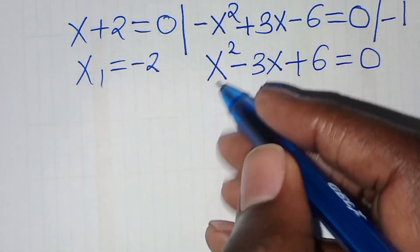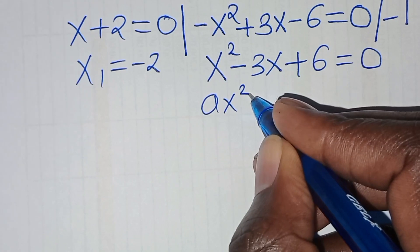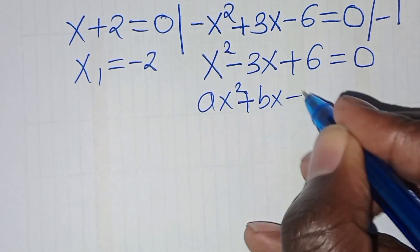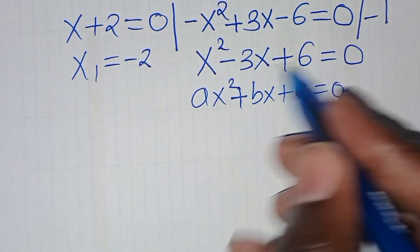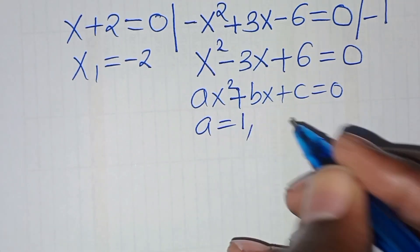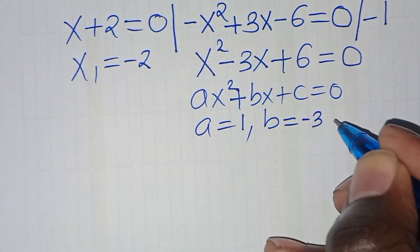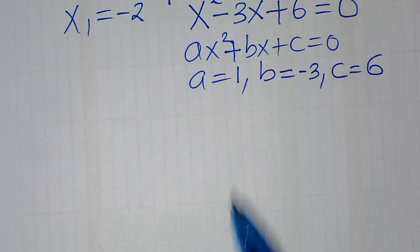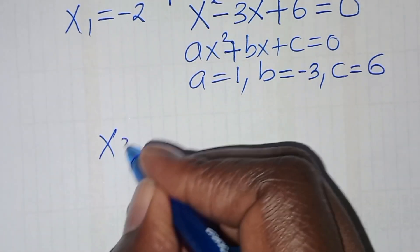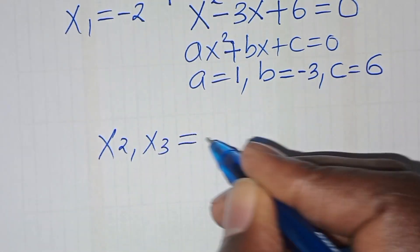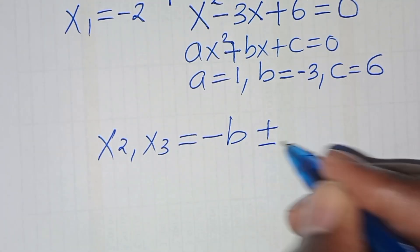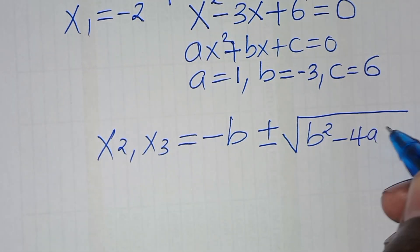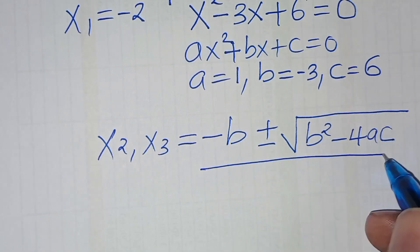This is a quadratic equation of the form ax squared plus bx plus c equals 0. From this quadratic equation, a is equal to 1, b is equal to minus 3, and c is equal to 6. To solve for the values of x2 and x3 we apply the quadratic formula: minus b plus or minus the square root of b squared minus 4ac, all divided by 2a.